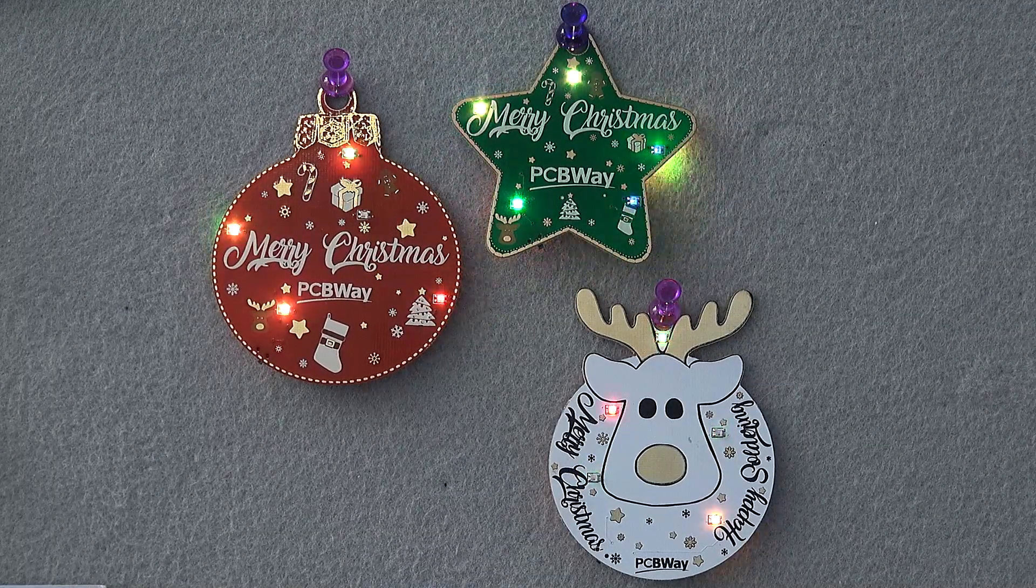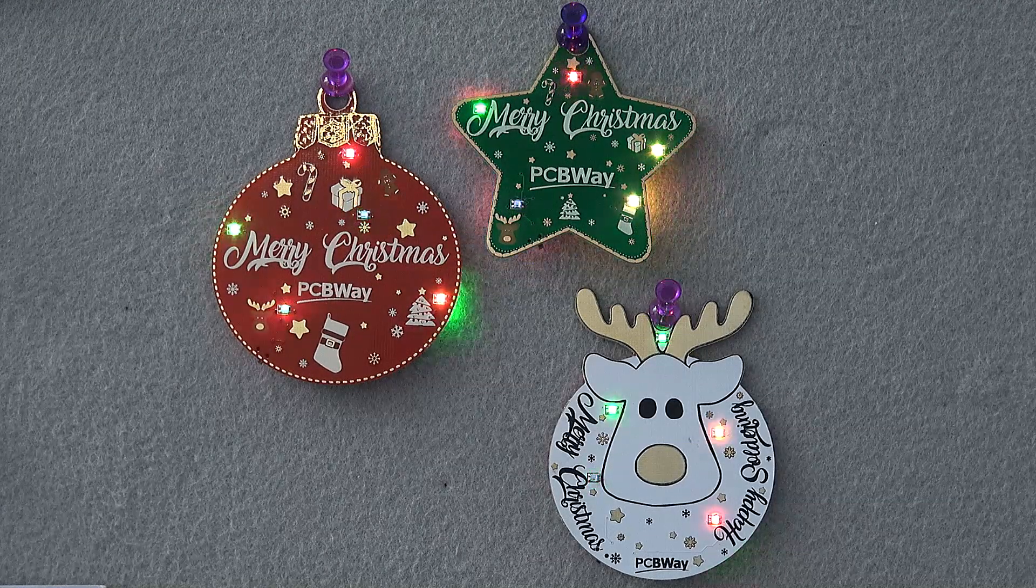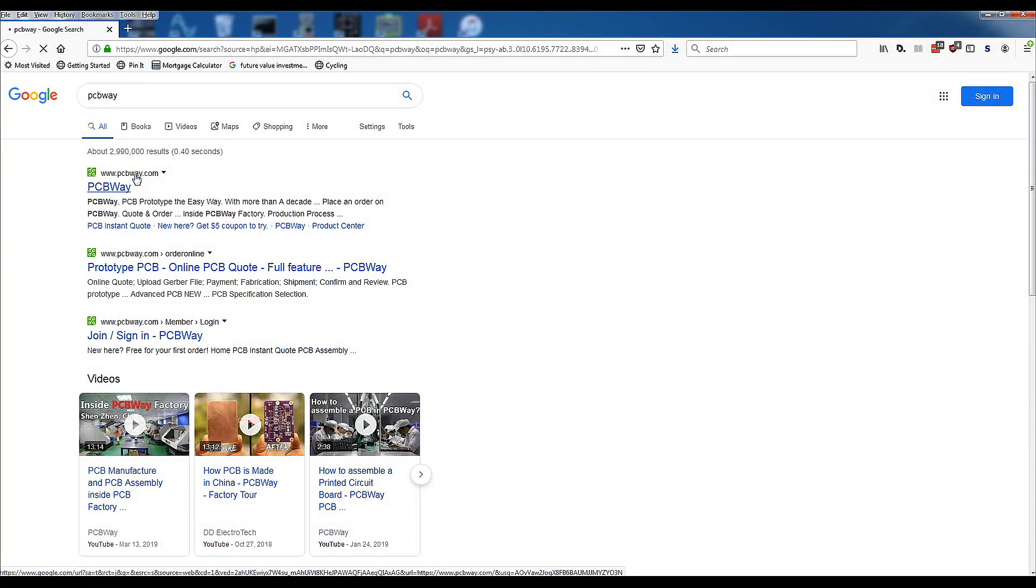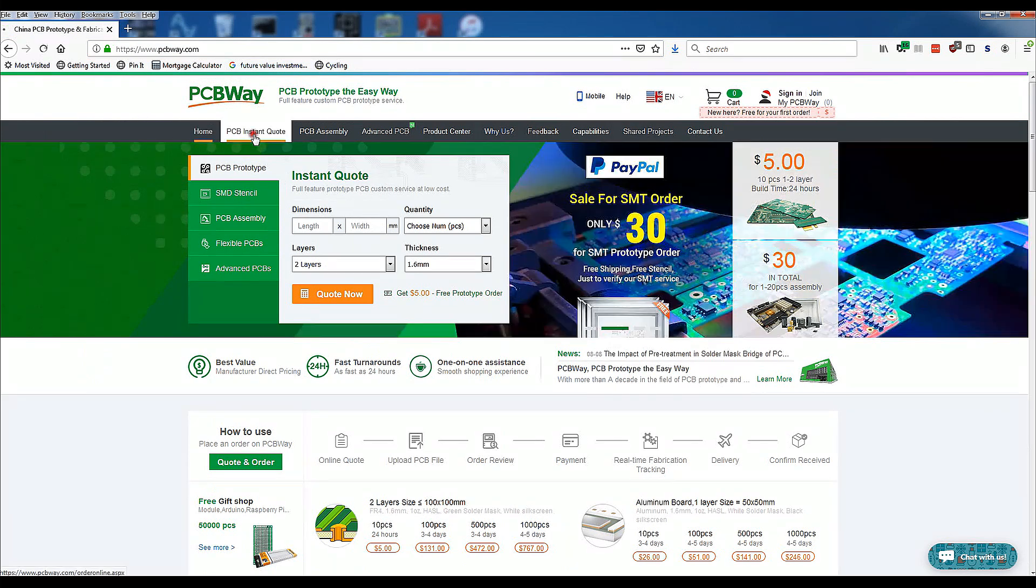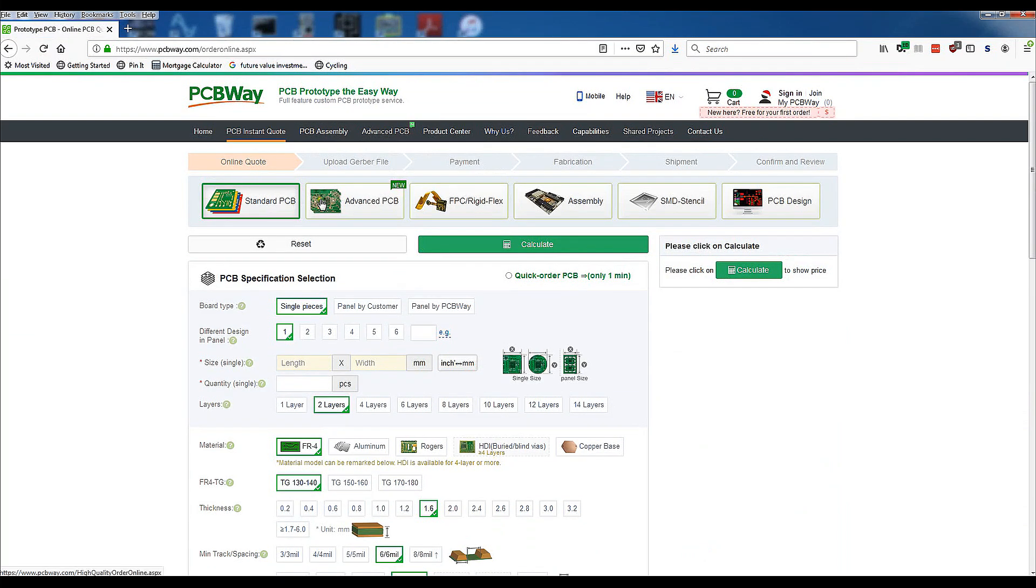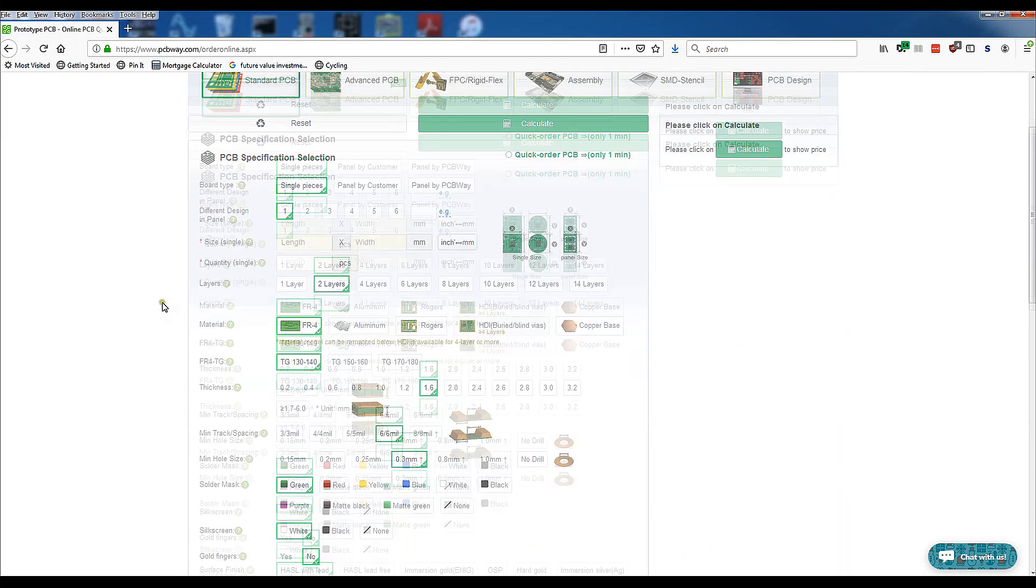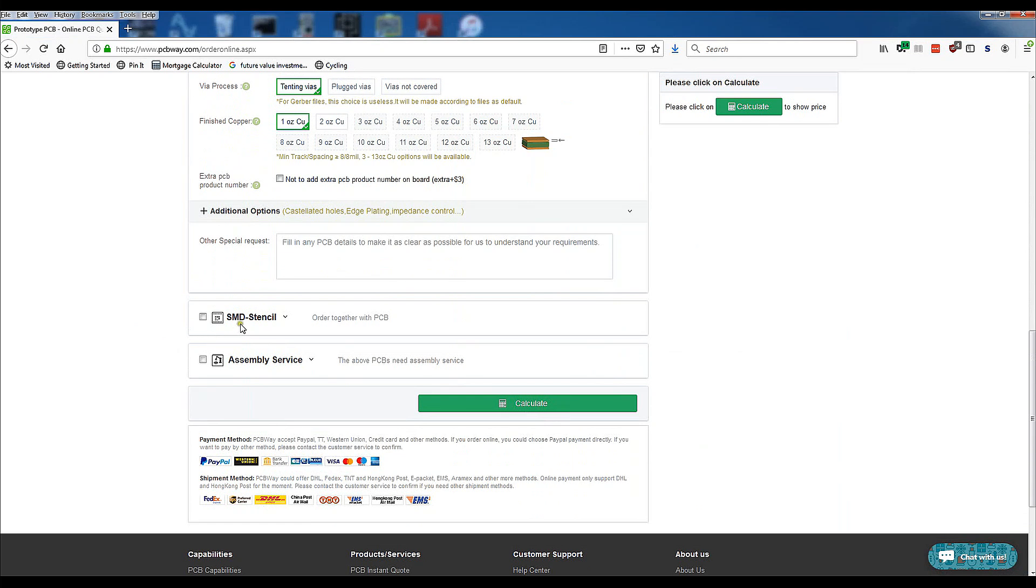Whether you need some fun PCBs for the holidays or something more serious, head over to the PCBWay website and click on the PCB instant quote. Then you can select various types of PCBs and your PCB specifications. You can then select if you want the stencil mask and even the assembly service. Then click calculate and simply place your order.